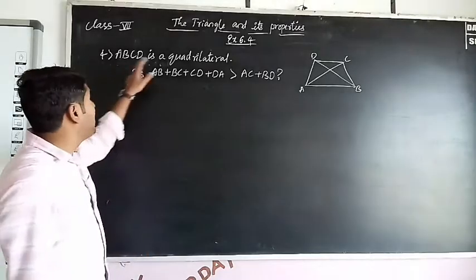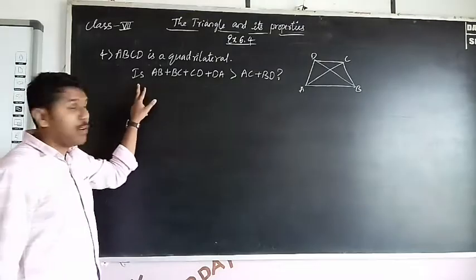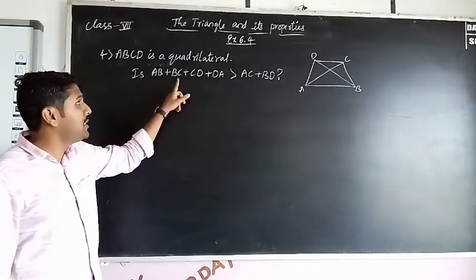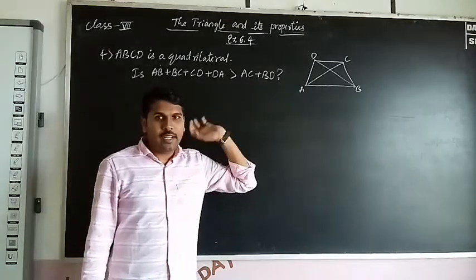ABCD is a quadrilateral. Is AB + BC + CD + DA greater than AC + BD? So how to solve this one?